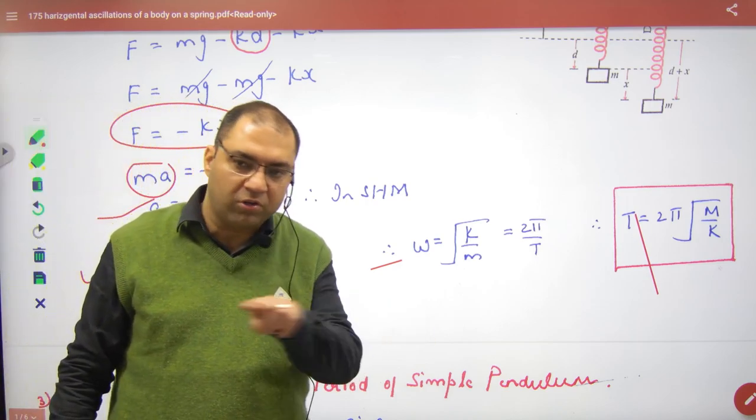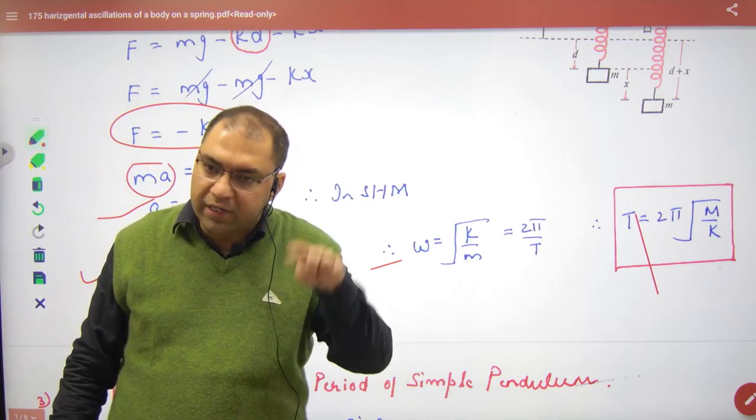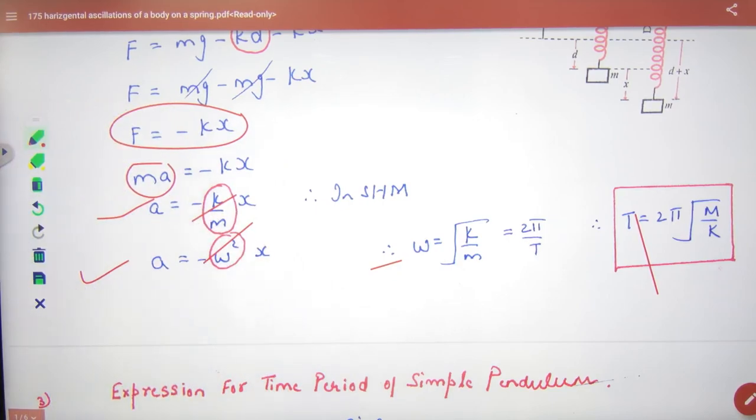Either the spring mass system is horizontal or vertical, the time period remains the same. T equals 2π times the square root of m by k.